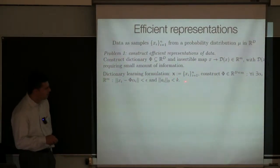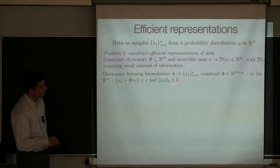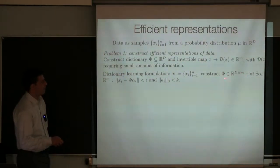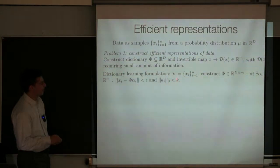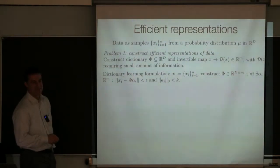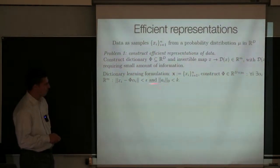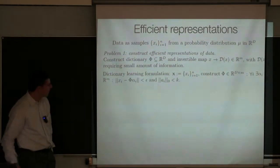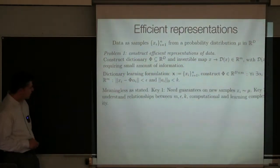Now there is a problem here — there are many problems actually with the statement of this problem. For example, take M really large. Maybe I can take M as large as N, take my dictionary to be equal to my data, and then I get only one non-zero alpha_i and so I get K equal to 1. So this problem actually doesn't make any sense as stated — but people solve this very often, and I don't understand what that means because the problem doesn't make sense.